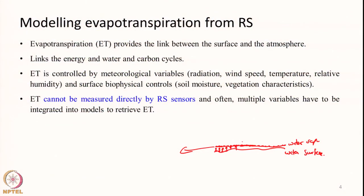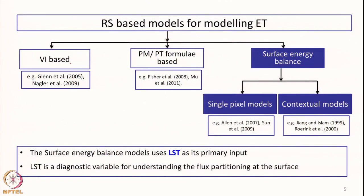Evapotranspiration cannot be measured directly by remote sensing sensors. We can only measure variables that provide clues — such as vegetation parameters and surface temperature — which are closely connected with the process. The remote sensing-based models for estimating evapotranspiration can be broadly classified into three categories: vegetation index-based models, Penman-Monteith or Priestley-Taylor formula-based models, and surface energy balance-based models. Nowadays machine learning models are also used extensively, but these three are the classical categories. We will get a broad overview of each.